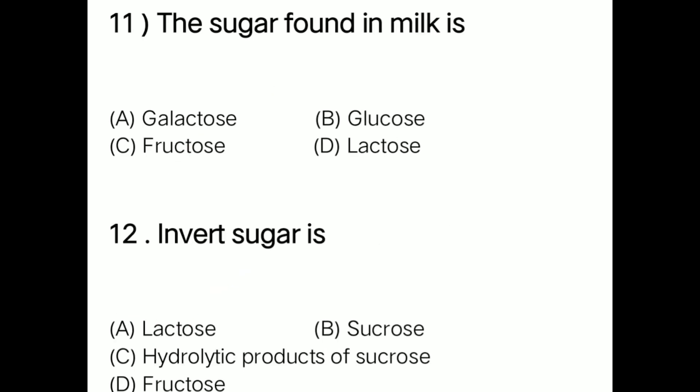Question 11: The sugar found in milk is option A galactose, option B glucose, option C fructose, option D lactose. The sugar found in milk is option D: lactose. Next question: The invert sugar is option A lactose, option B sucrose, option C hydrolytic products of sucrose, option D fructose. Correct answer is option C: invert sugar is a hydrolytic product of sucrose.